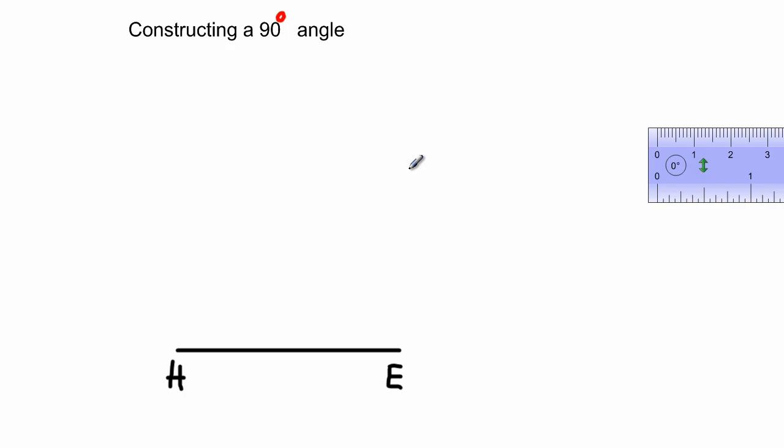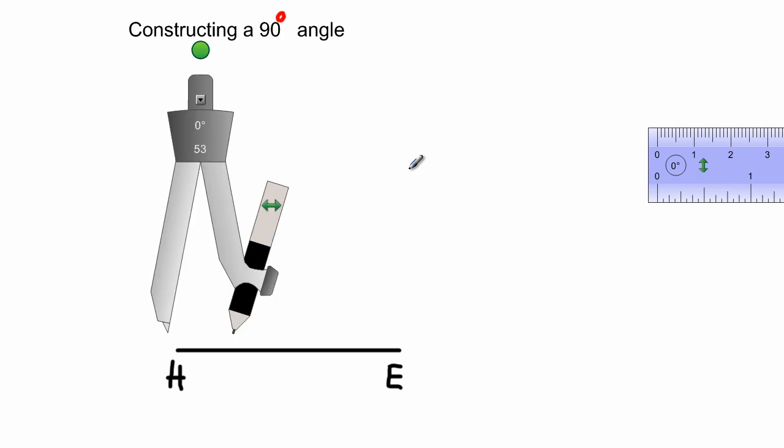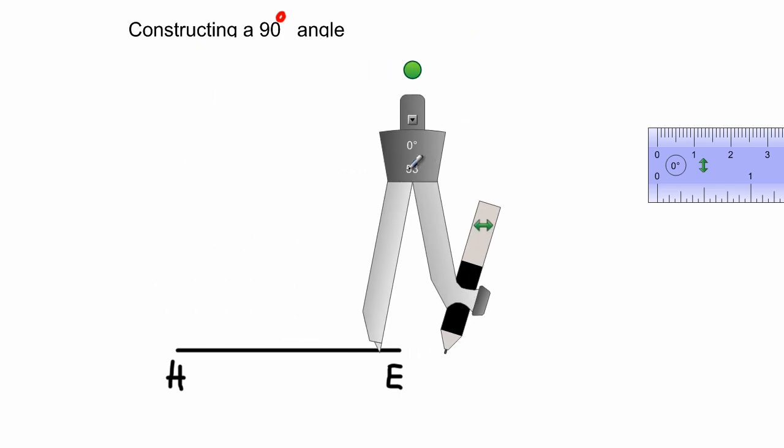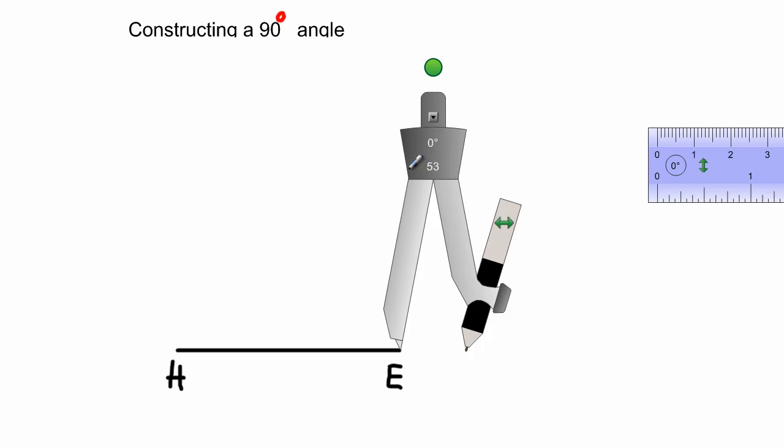It doesn't really matter how wide or to what radius you open your compass. I'm going to work with that for now. Since I'm going to place it at E, let's say we're asked to construct the 90 degree angle at the point E. Now what I'm going to do, I'm going to be using red lines to indicate my construction lines.